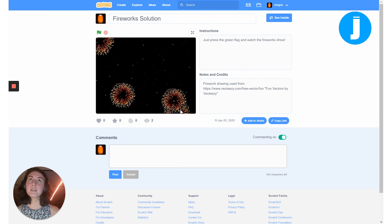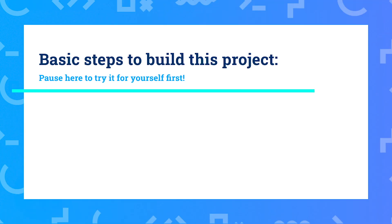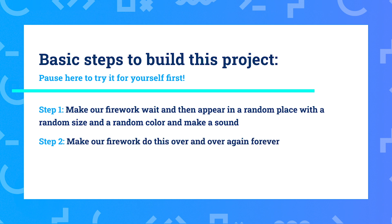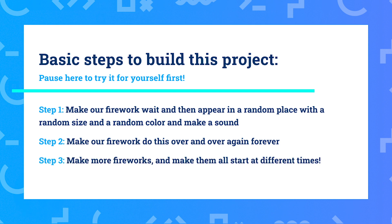The general order of steps we're going to follow: first I'll start with just one firework. We'll make it disappear at the very beginning, make it wait a little bit, then appear in a random place with a random size and color with the sound. Once we have that working we'll make it keep doing that over and over again forever. Then we'll add all the other fireworks and add just a couple of blocks so they don't all start at the same time.